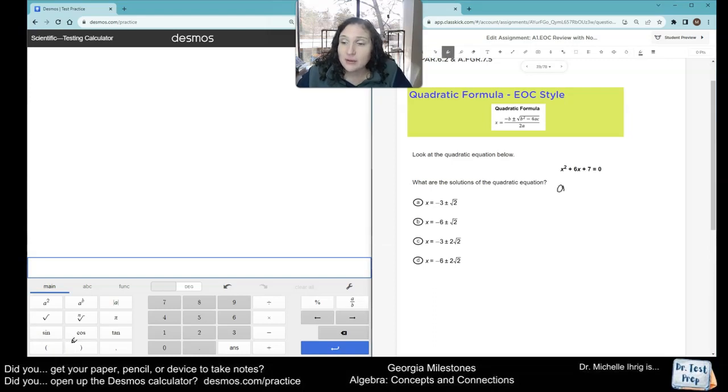A equals 1, B equals 6, C equals 7. So X equals the opposite of B, plus or minus radical. B squared, so 6 squared, minus 4 times A times C, all over 2A.